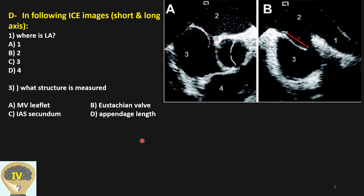Here we have an ICE image — intracardiac echocardiography in short axis and long axis. Where is the left atrium and right atrium as a result? And second, what structure here has been measured — this one?